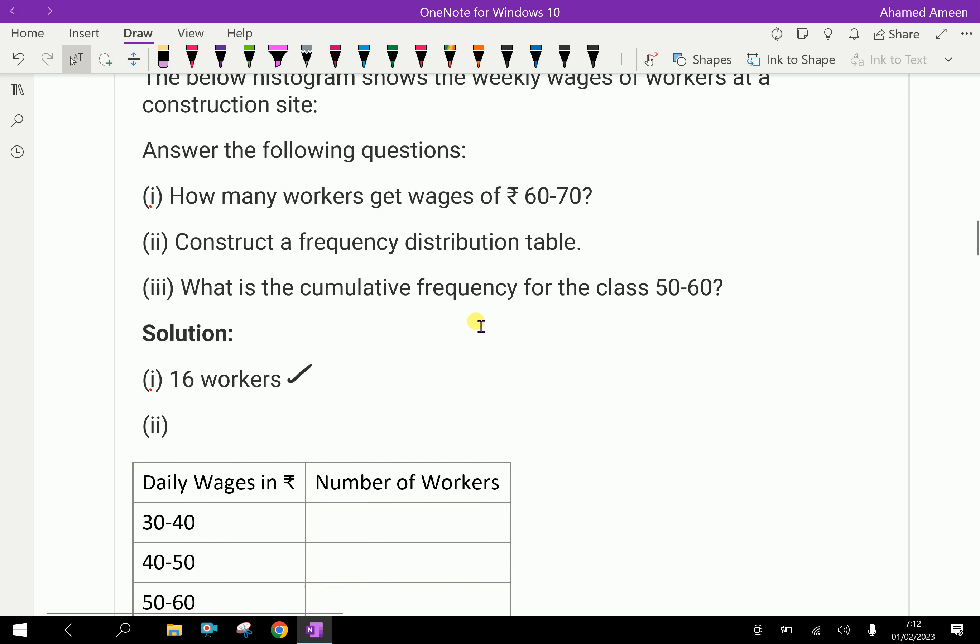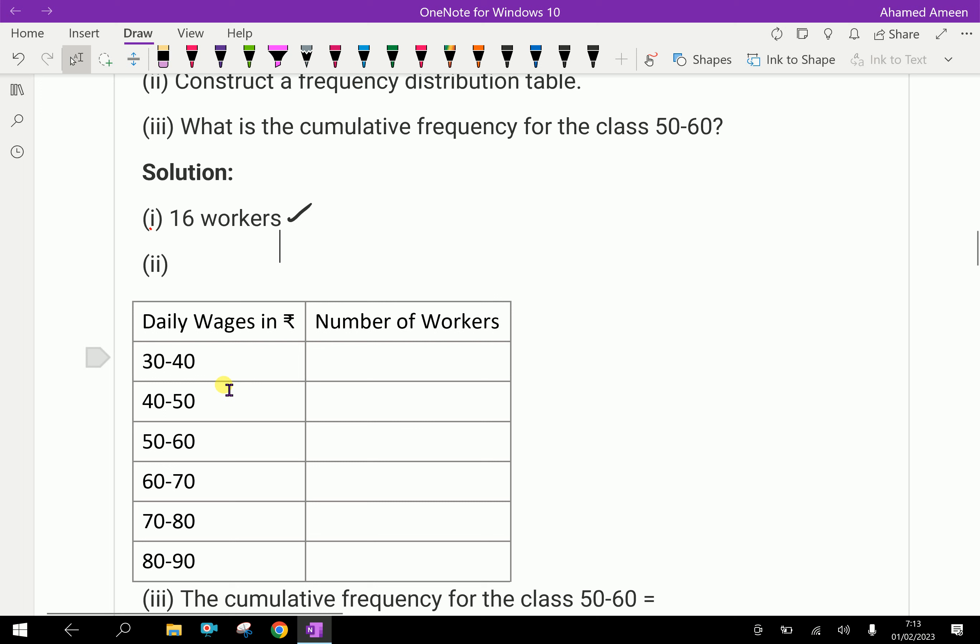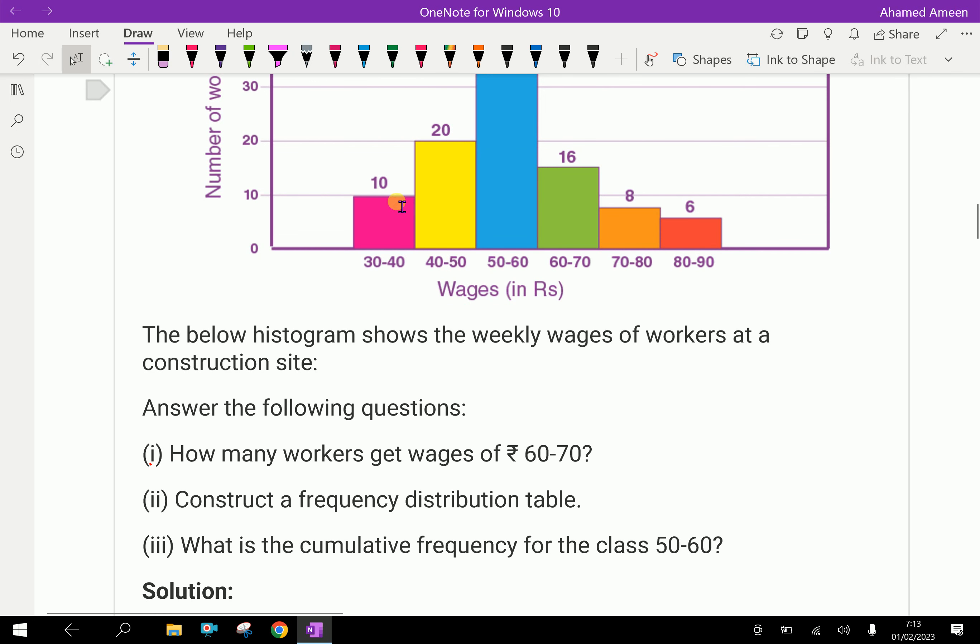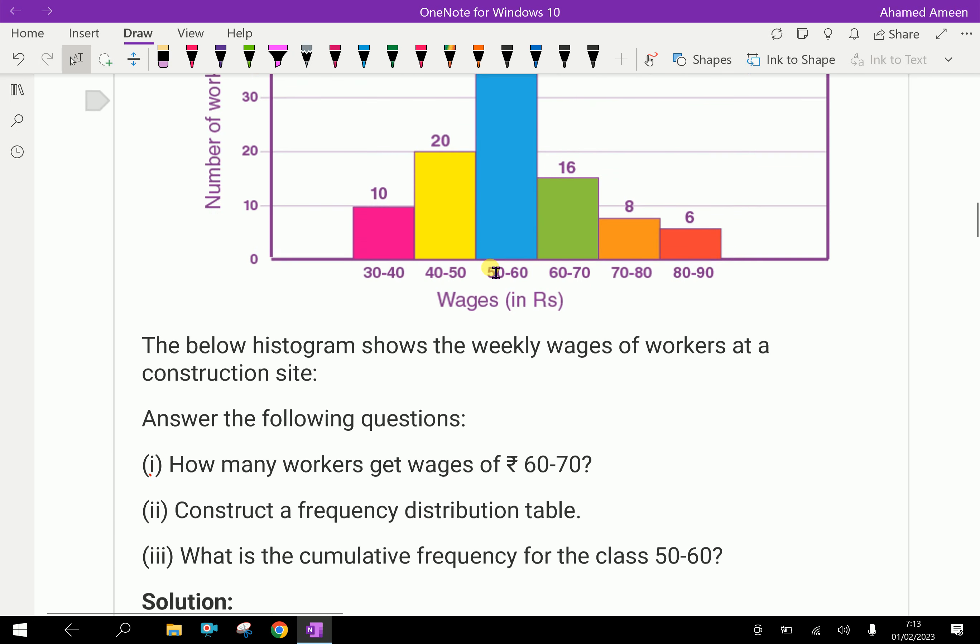And second, construct a frequency distribution table. Look here. The frequency distribution table, you have to write daily wages in class intervals of 10, that is 30 to 40, 40 to 50, 50 to 60, 60 to 70, and so on. Here, you have to fill these wages: 10, 20, 40, 16.